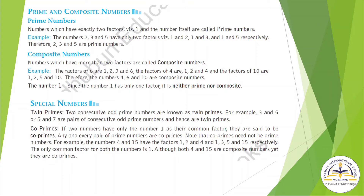Next, Composite Numbers: numbers which have more than 2 factors are called Composite Numbers. For example, 6 has factors 1, 2, 3, and 6. Now Special Numbers: Twin Primes — two consecutive odd prime numbers are known as Twin Primes, for example 3 and 5, or 5 and 7. Coprimes: if two numbers have only 1 as their common factor, they are said to be Coprimes.